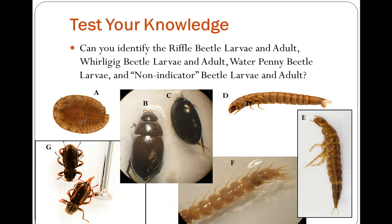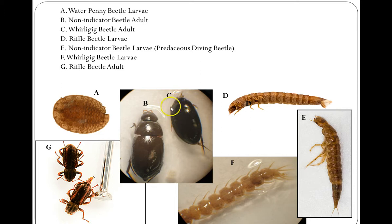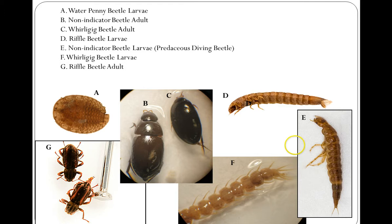Alright, hope you got some answers written down — let's go through these. The Water Penny beetle larva is A: that flat round disc that looks like a penny — usually a pretty easy one. B is our non-indicator beetle adult, not a Riverwatch indicator. C is the Whirligig beetle; this one looks kind of like a whirligig beetle but has a clear definition between its thorax and abdomen and head and thorax, whereas the Whirligig beetle only has clear definition between its head and thorax. D is the Riffle beetle larva — there's the trap door where the gills come out, the same body covering all the way back, with a tan leathery appearance. E is a non-indicator beetle larva, the predaceous diving beetle larva. You can see the head with large jaws, three pairs of legs, and filaments coming off the end of the tail.